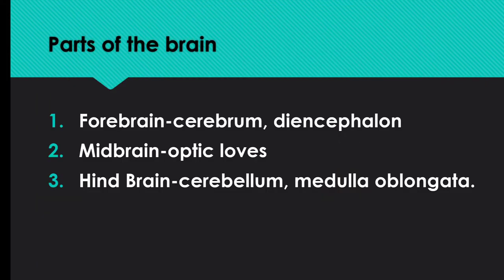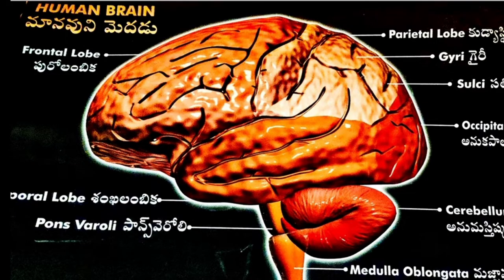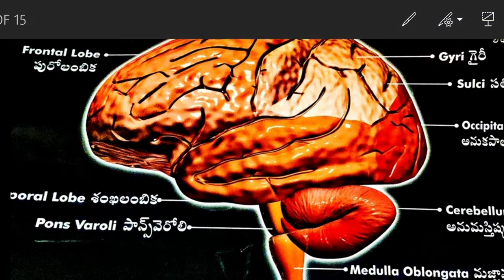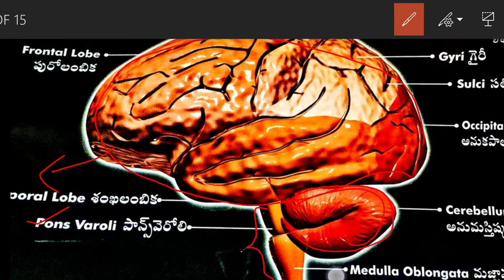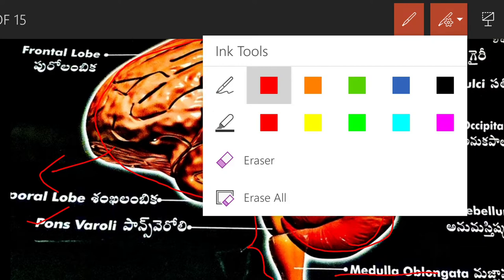The brain contains mainly three parts: forebrain, midbrain, and hindbrain. The forebrain contains the cerebrum and diencephalon. The midbrain contains optic lobes. The hindbrain contains the cerebellum and medulla oblongata. The midbrain is present in the inferior side of the brain. The medulla oblongata extends to form the spinal cord.